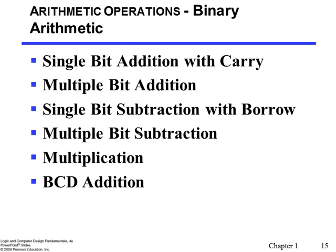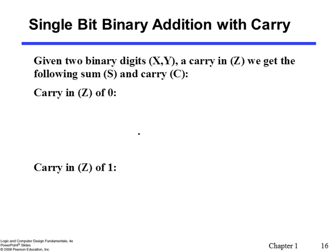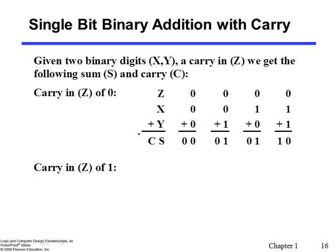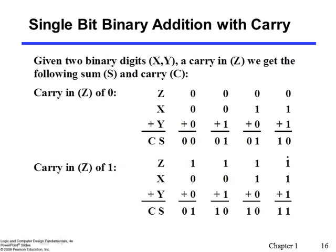In binary we can do addition, subtraction, and multiplication — similar to the decimal number system. For single-bit binary addition with no carry-in (z represents the carry-in), with two numbers x and y we get these results. In the presence of a carry-in, the results are shown here. We can easily work through this compared with decimal arithmetic.